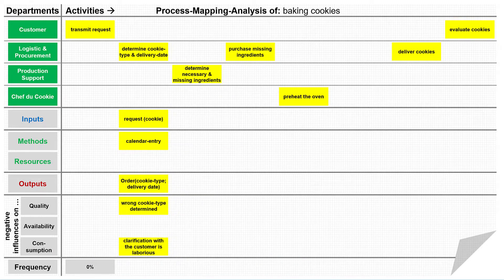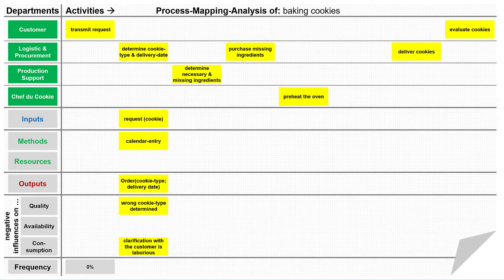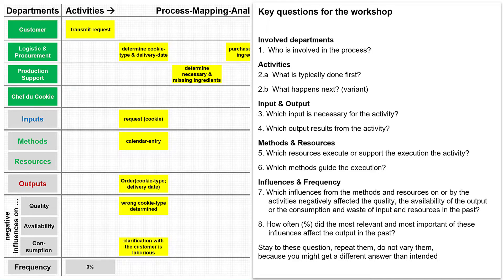In the workshop the expert stressed a high amount of effort involved in clarifying orders in the past. The question arises whether the additional problem — cookies boxed working time consumption too high — should be included in the voice-to-criticals tool to continue its analysis. It is quite possible that you also find negative influences in your activities that have no relation to one of your defined problems, and it would be perfectly normal to adjust the project charter retroactively, together with the sponsor, to add or change entries.